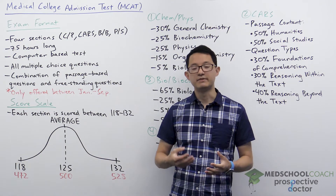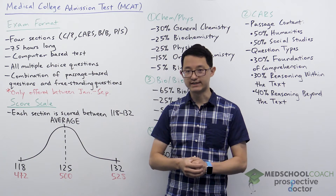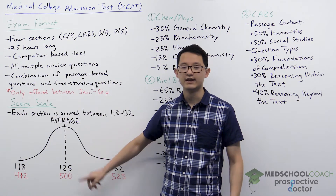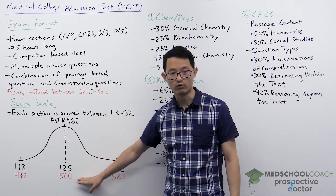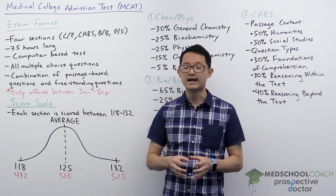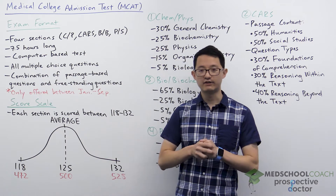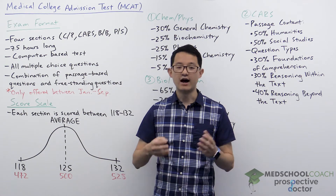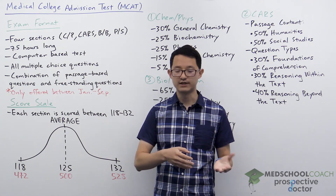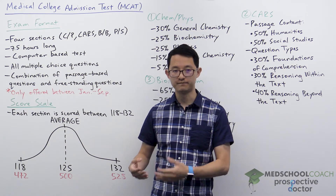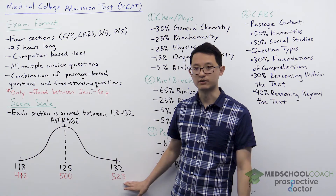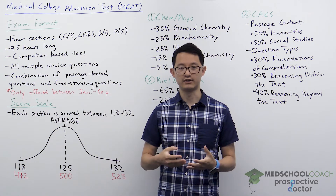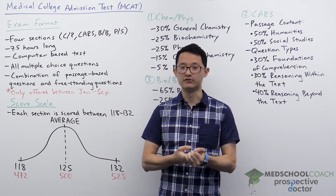The scoring system is very convenient for medical school admissions committees. Since the average score on a section is 125, multiplying by four means the average total score for the entire exam is 500. This makes it easy for admissions committee members to see whether a student is above average — scoring above 500 — or below average — scoring below 500. In terms of a good target score, you'll want to look at the average GPA and average MCAT of the medical schools you want to attend.